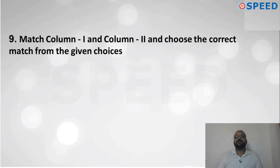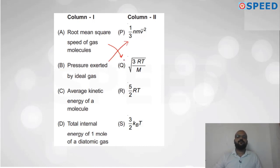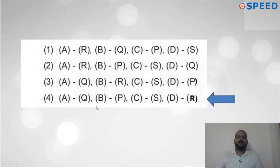Question nine: Match column one and column two. Root mean square speed matches with Q: √(3RT/M). Pressure exerted by gas = (1/3)(N/M)V̄². Average kinetic energy = (3/2)k_BT. Total internal energy = (5/2)RT for diatomic gas. This gives the correct sequence, and checking options, option number 4 is correct.